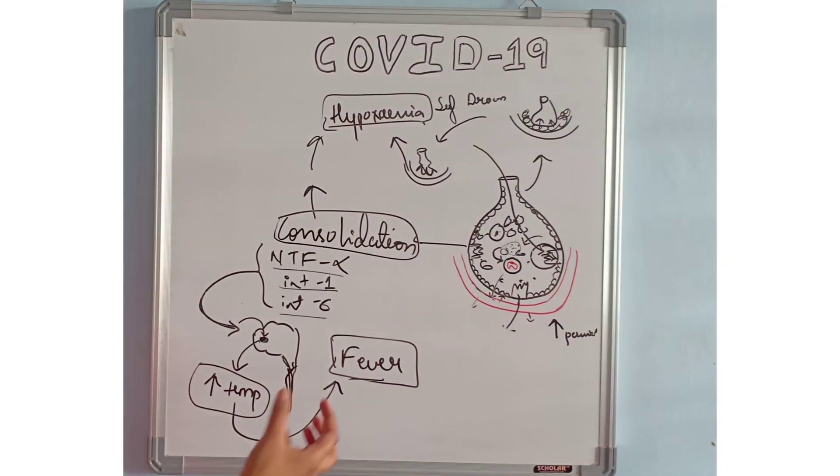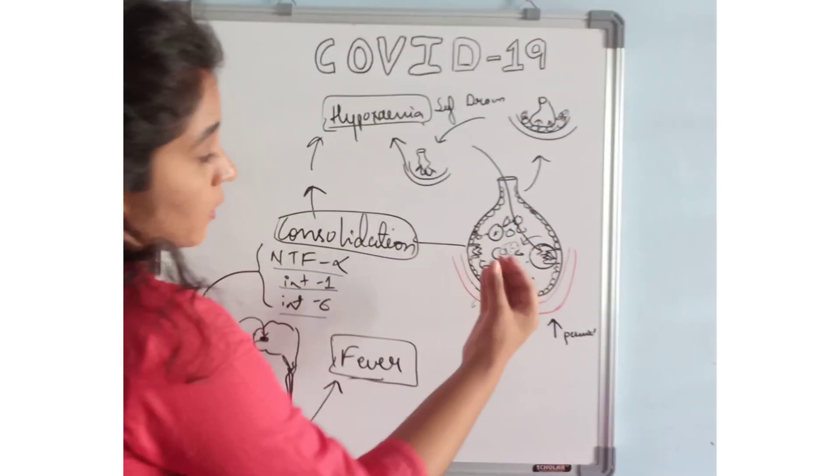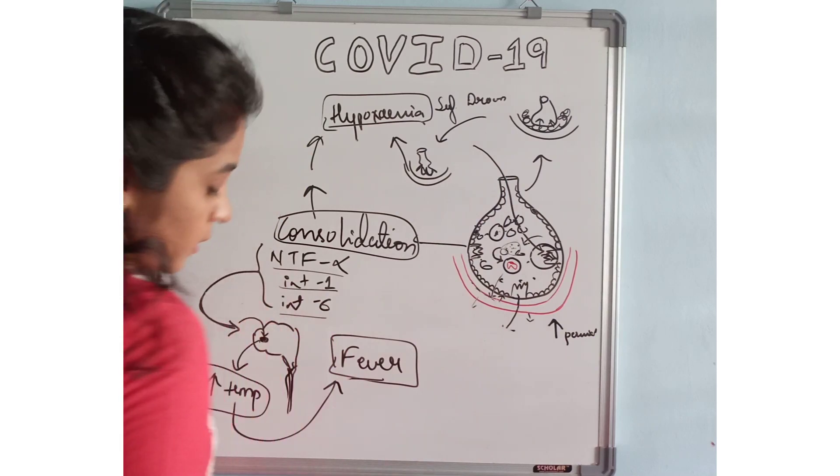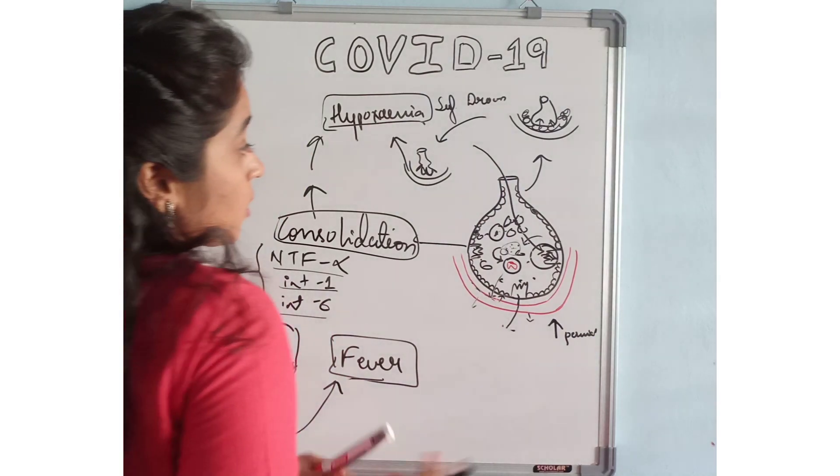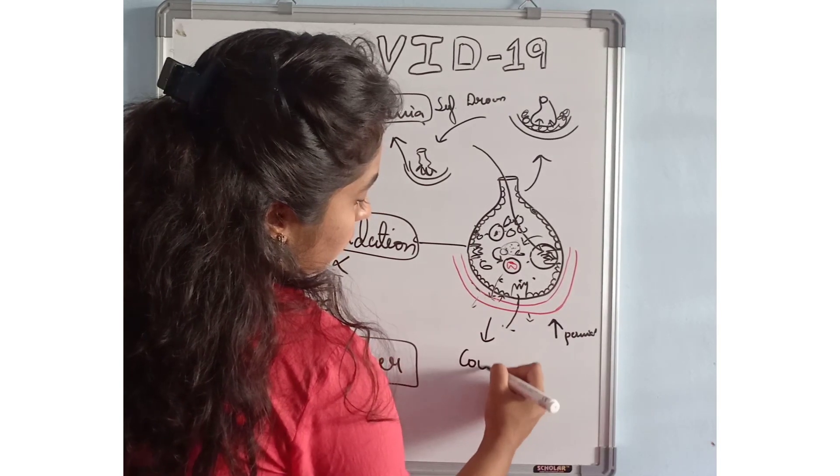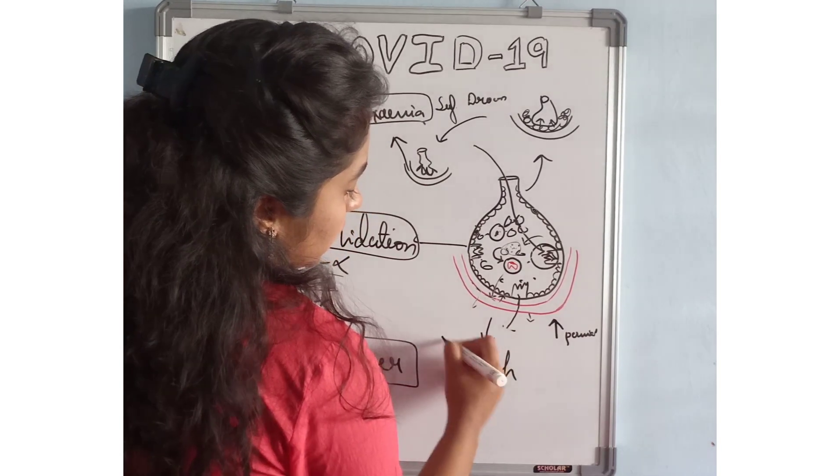Due to excessive cells and the crowding, naturally the alveoli cough up all the cells and other things in the way of sputum.